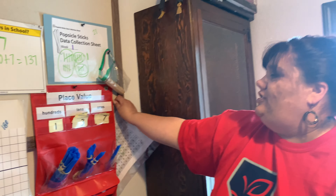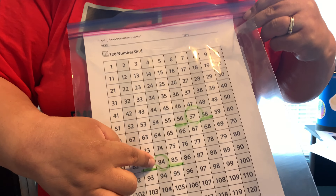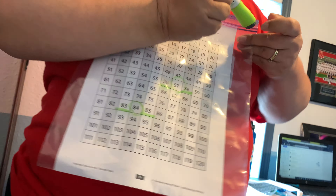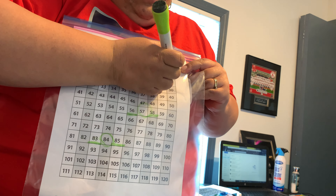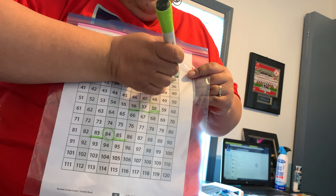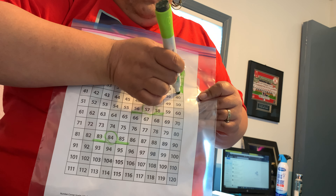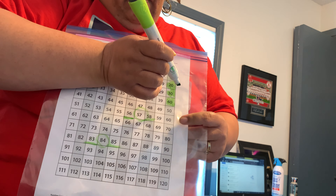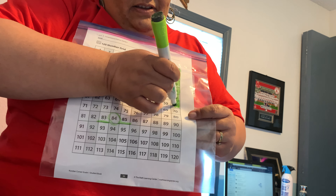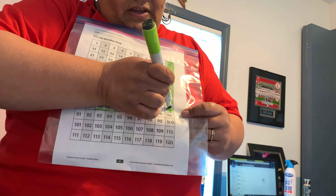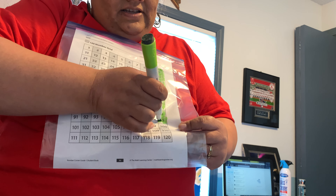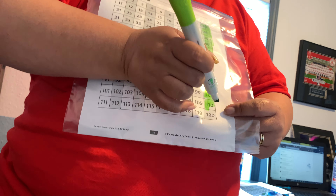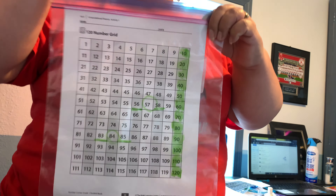We're going to look at this today. I understood it was a little hard to see the number 84. Today we're going to count by 10s and color in those 10s. So we start with 10 — what would be next? 20. Keep thinking as I color: 30, 40, 50, 60, 70, 80, 90, 100, 110, and 120. There you go.